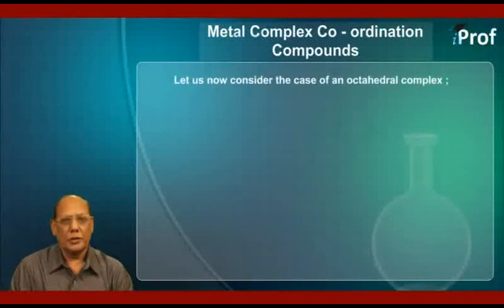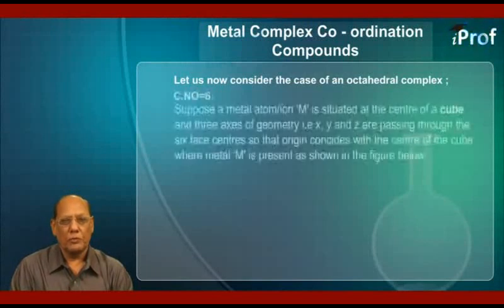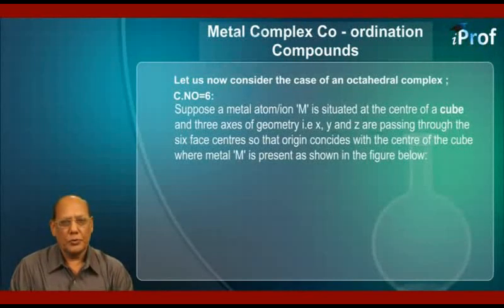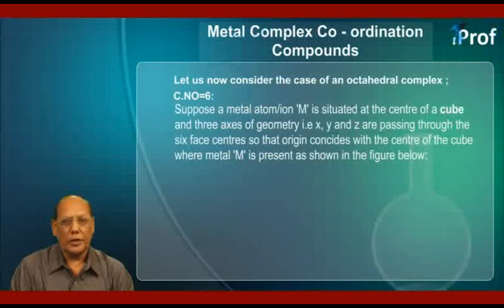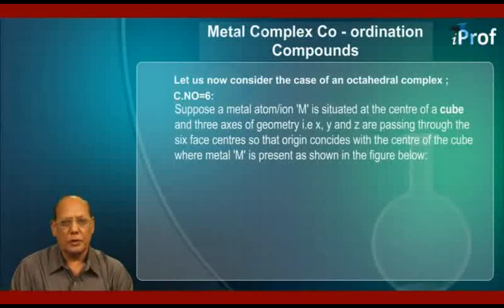Let us now consider the case of an octahedral complex, that is, coordination number equal to 6. Suppose a metal atom or ion M is situated at the center of a cube, and three axes of geometry — X, Y, and Z — are passing through the six face centers, so that the origin coincides with the center of the cube where metal M is present, as shown in the following figure.